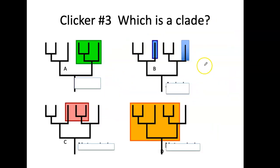Another clicker: which of these is a clade? Per definition, it has to include the common ancestor and all of its descendants. For example, this is the common ancestor, but if I'm missing some descendants, it's not a clade. The only answer that qualifies is option eight.